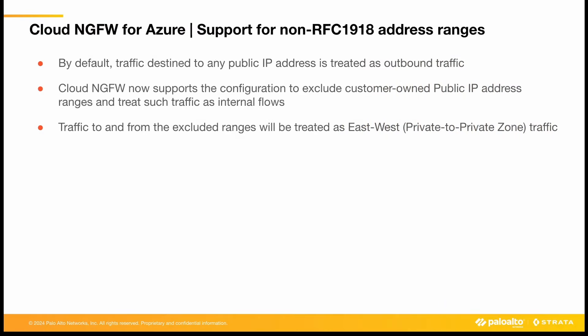By default, traffic to any public IP address is considered outbound. With the latest update, Cloud NGFW for Azure now supports configuring certain public IP address ranges to be excluded from this default behavior. This makes the firewall treat such flows as east-west traffic. This new configuration is supported for both VNet and virtual WAN deployments.